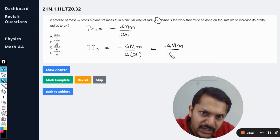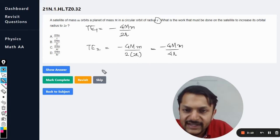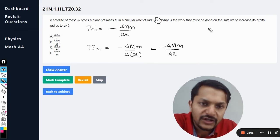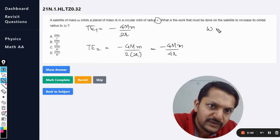So what is the work done? I will say this is the total energy initial and this is final. So work done will always be equal to the final total energy minus initial total energy.